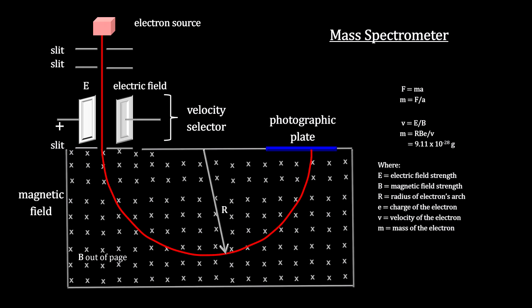Thomson showed that the rays were made of particles that were around 9.11 times 10 to the minus 28 grams. That's 1800 times lighter than the lightest atom, hydrogen, that had also been measured with mass spectrometers.